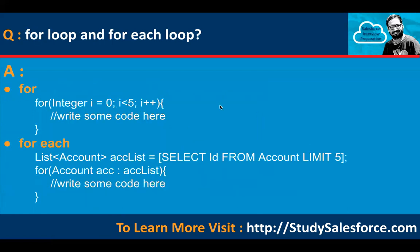What is the difference between a for loop and a for-each loop? In a for loop, you need to initialize, put a condition, and put an increment or decrement, then write code inside the braces. A for-each loop is implemented for iterating collections. If you have queried some data from an SObject and it is stored in a list, you can use a for-each loop to iterate on that list. One by one, each account record is stored in the acc variable, and inside the braces you can write your code.